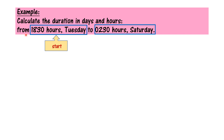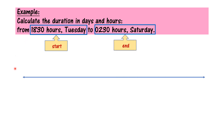And 00.30 hours Saturday is our end time. Next, draw a line. After that, write the start time, and then write the end time on the right side. Then let's start to calculate.